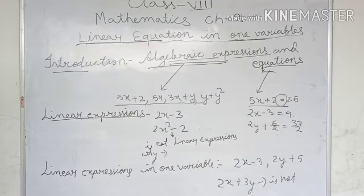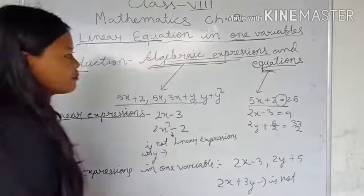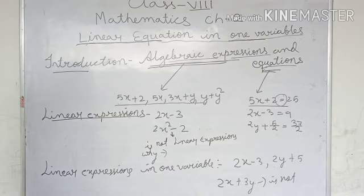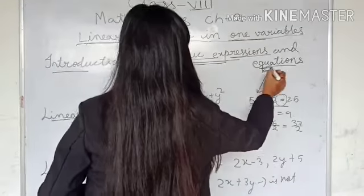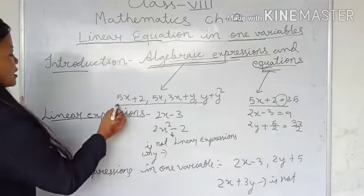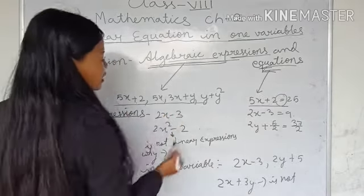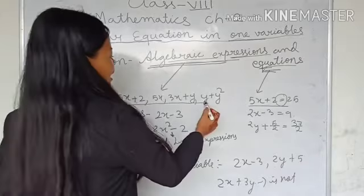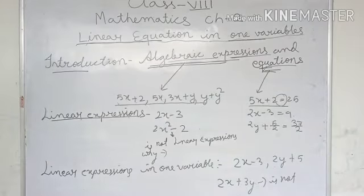Now I will give a slight introduction about this chapter: algebraic expression and equation. There is a difference between algebraic expression and equation. Now what is an expression? For example: 5x plus 2, 3x plus y, and y plus y squared. These are called algebraic expressions.